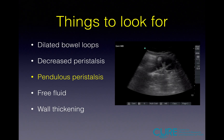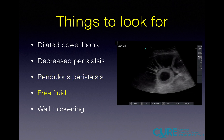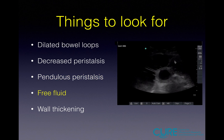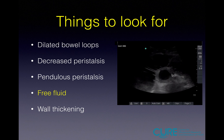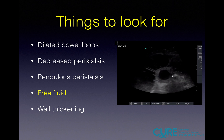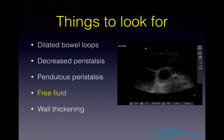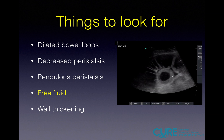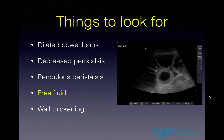Next, we look for pendulous peristalsis — that's the to-and-fro movement of bowel content, like what we saw in the case presented. Next is free fluid. When you see free fluid, that's probably a later finding: the blockage causes everything to back up with increased pressure, and the fluid extravasates through the walls and accumulates outside of the bowel. There are a couple of small studies that show free fluid is a predictor for the need for surgery.